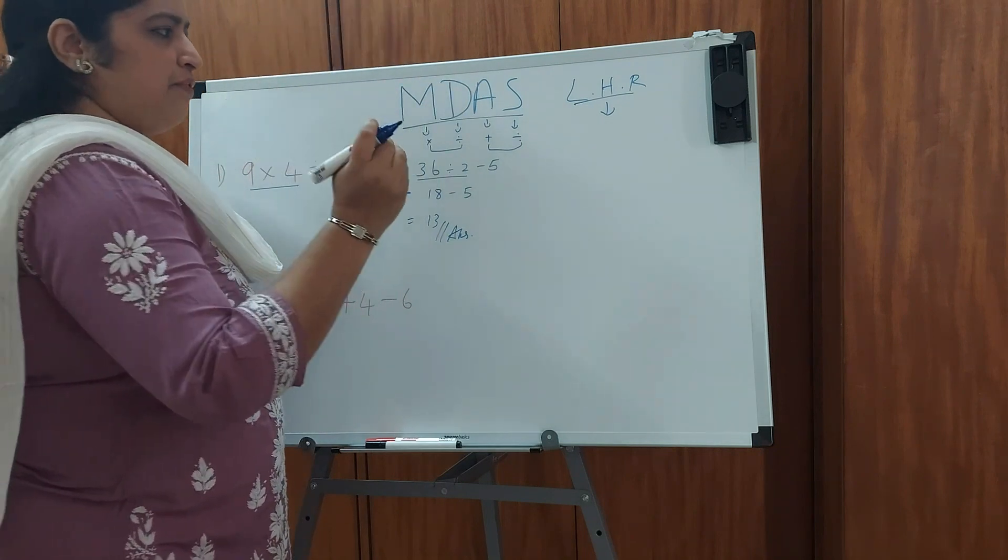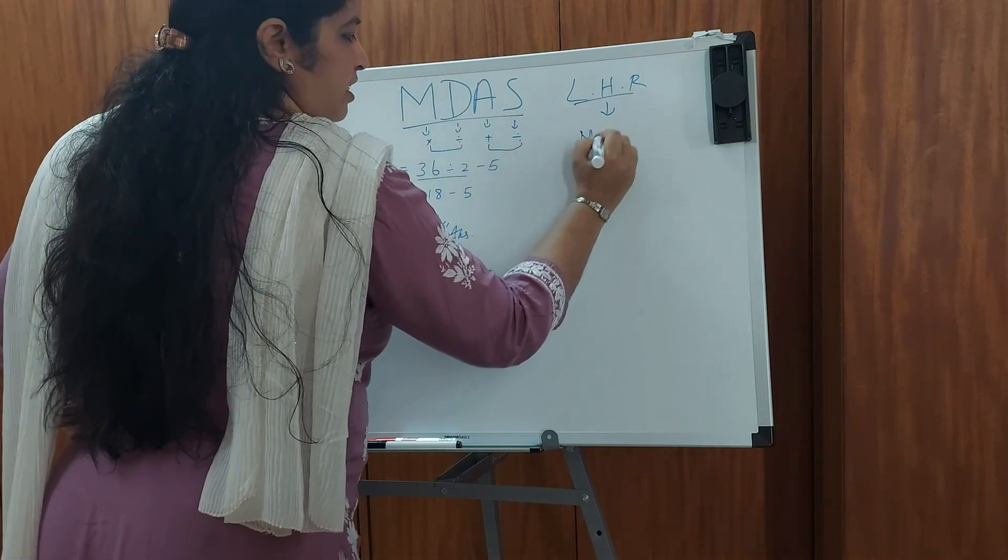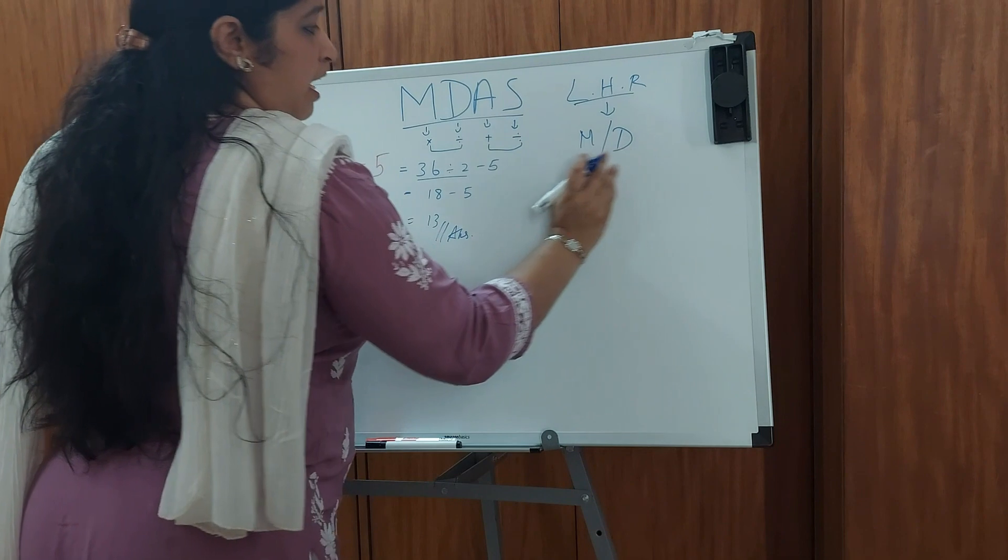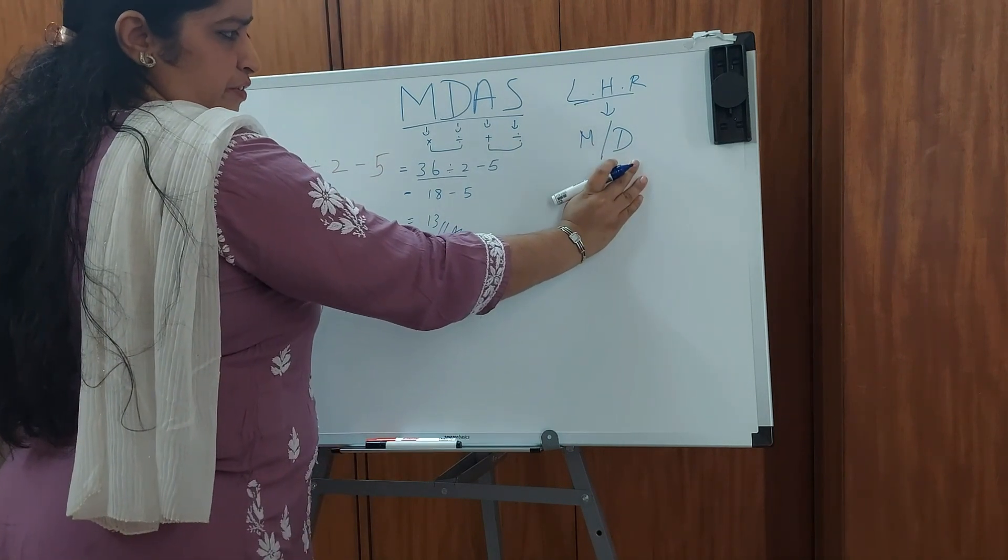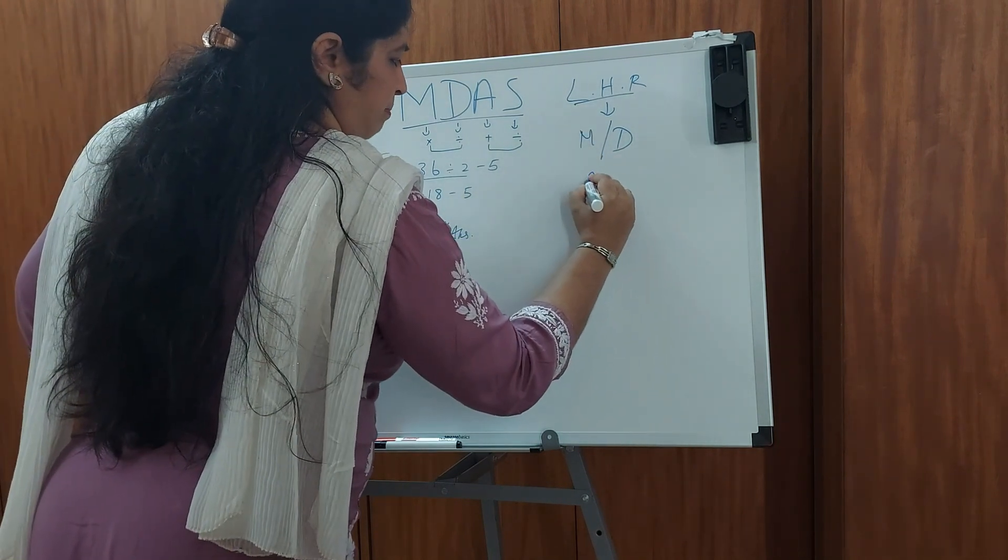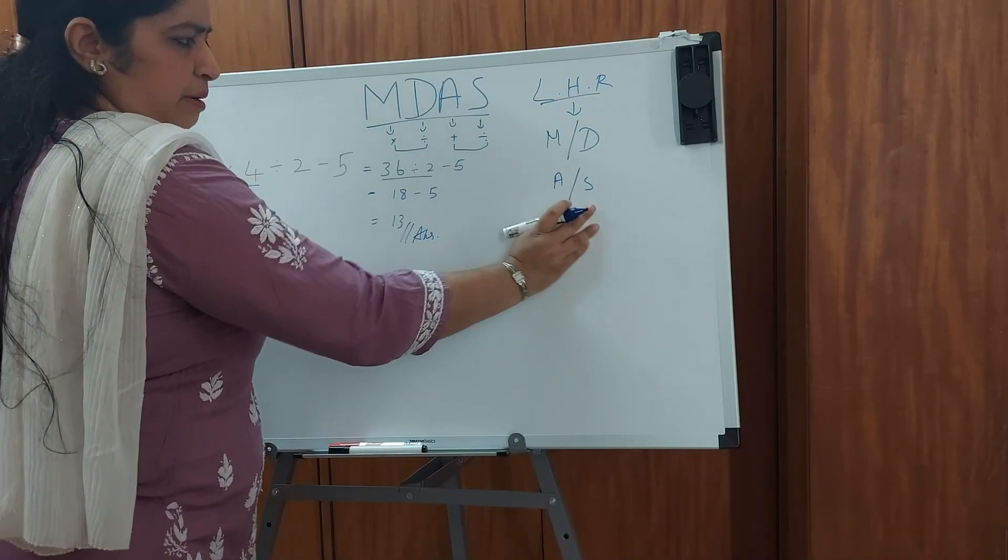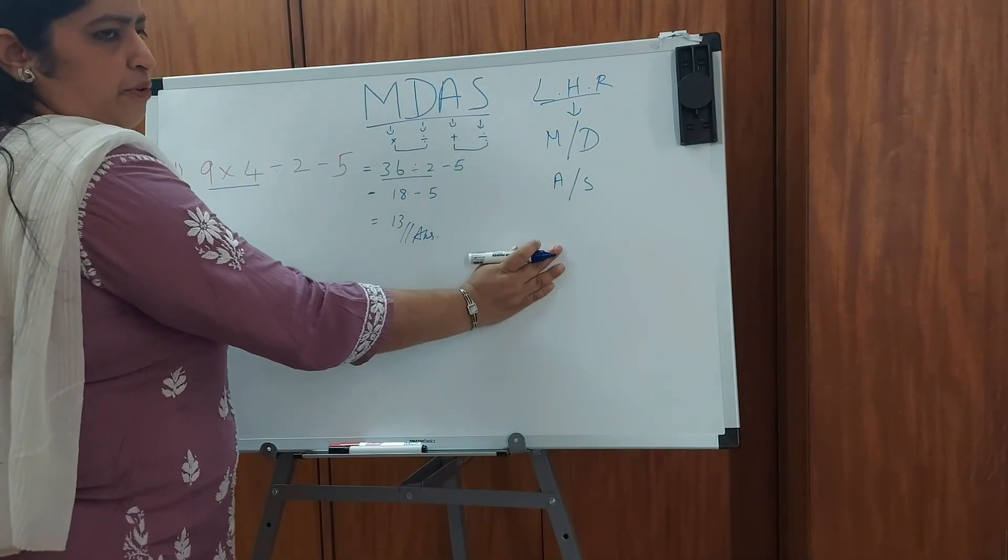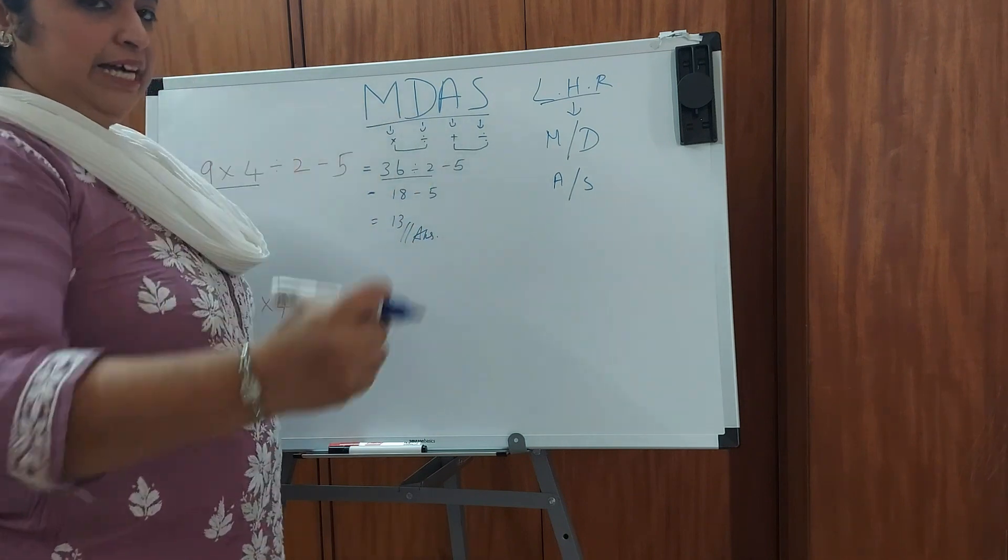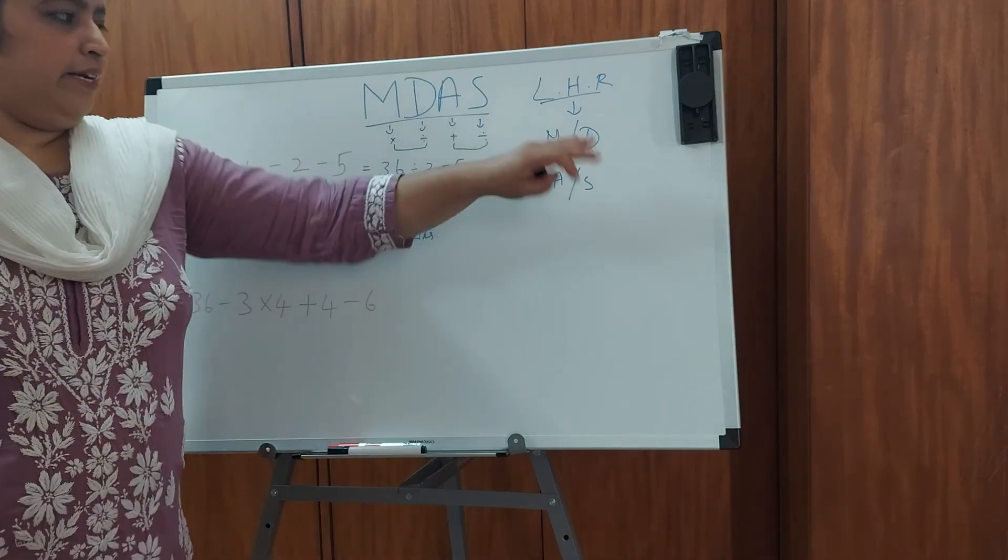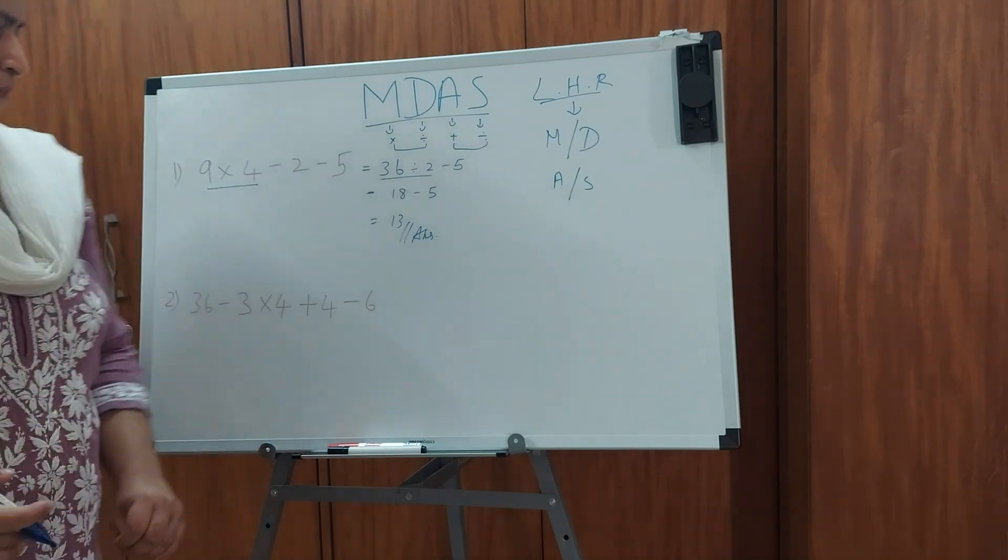Whichever comes first from the left side. If multiplication is coming first, we will do multiplication. If division is coming first, we will do division. Same way for addition and subtraction. If we have addition first, we will do addition. If we have subtraction first, we will do subtraction. This is our left hand rule. So let me clear this with a simple question so that this left hand rule is also clear for you.